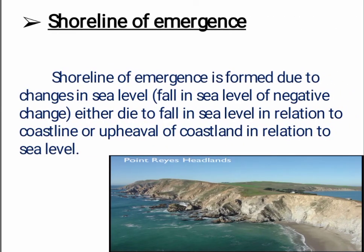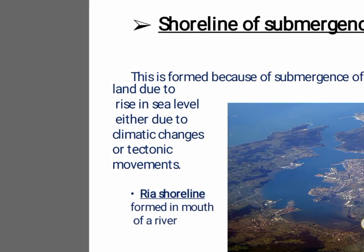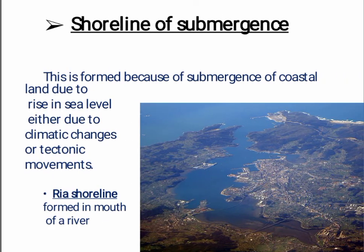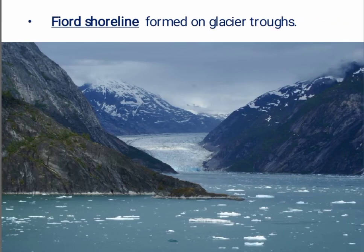The first type is the shoreline of emergence, formed due to changes in sea level either due to a fall in sea level in relation to the coastline or upheaval of coastland in relation to sea level. The next is the shoreline of submergence, formed because of submergence of coastal land due to rise in sea level either due to climatic changes or tectonic movement. There are two types of submerged shorelines: the ria shoreline, formed at the mouth of a river, and the fjord shoreline, formed on glacial troughs.